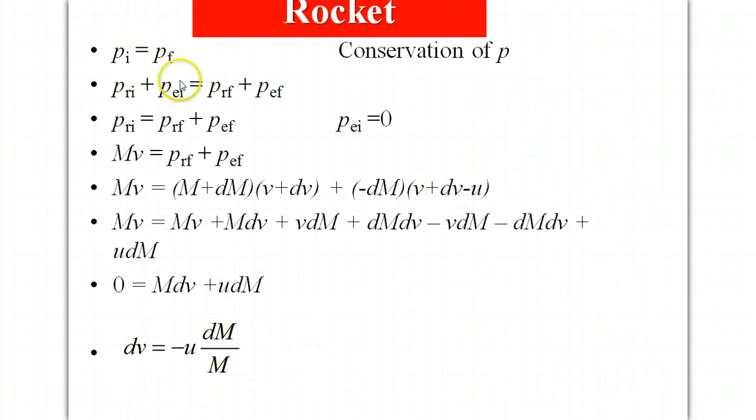Conservation of momentum. Mass of the rocket initial must equal mass of the rocket final plus mass of the exhaust final. The momentum of the exhaust initial is zero, and so the momentum of the rocket initial must be equal to the momentum of the rocket final plus momentum of the exhaust final. So substituting in the values we have in our table we get something like this.